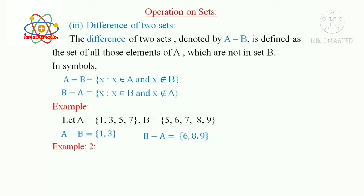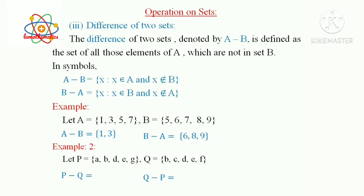For more clarification, consider another example. Let P = {A, B, D, E, G} and Q = {B, C, D, E, F}. Here, we find P−Q and Q−P. P−Q is the set of elements which are in P but not in Q. That is, to find P−Q, delete the common elements of P and Q — that is B, D, E — from set P. We get {A, G}. That is, P−Q = {A, G}.